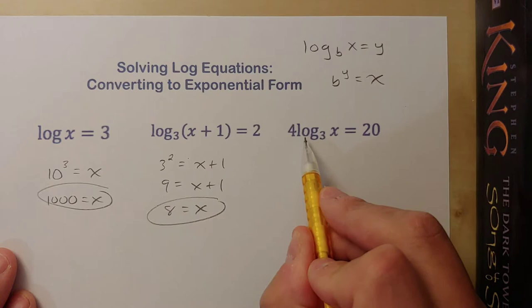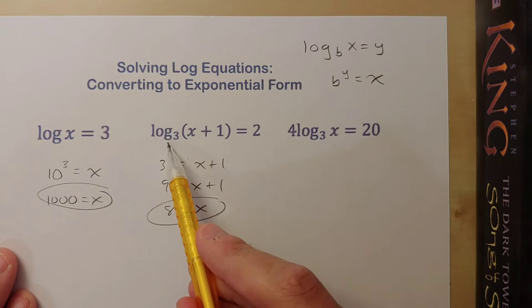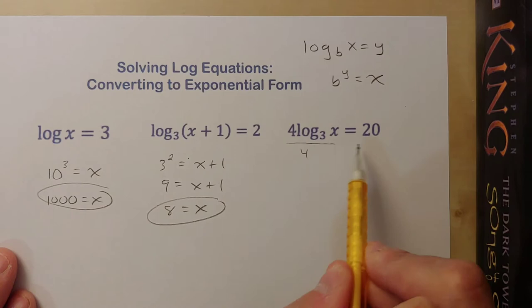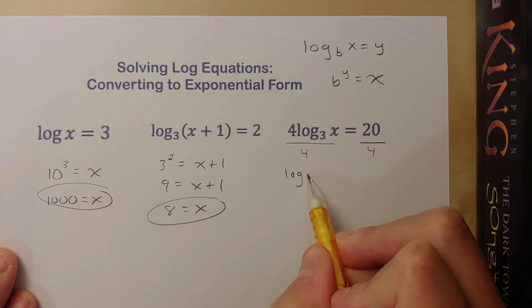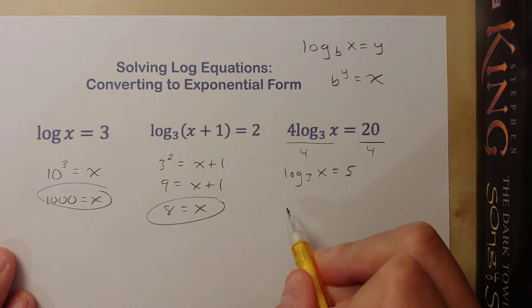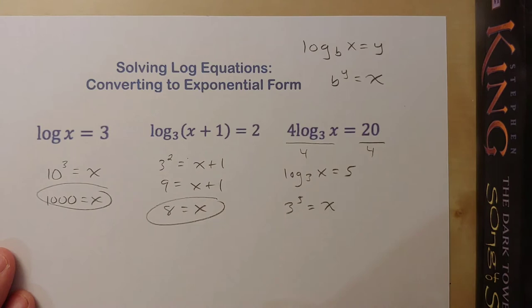Now notice that here we do have a coefficient out front. Before we can convert a log into its exponential form, you want to make sure that log term is isolated. So in this case, before I convert, I'm going to divide both sides by 4 to get rid of that coefficient. Now I have log base 3 of x equals 5. Now I'm going to convert this: 3 to the fifth power equals x, so 3 to the fifth power is 243.